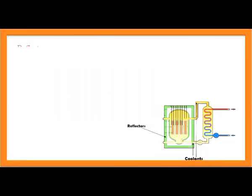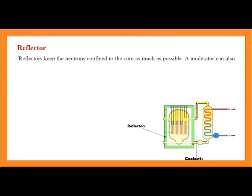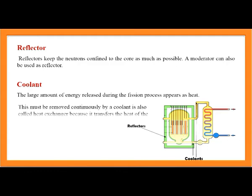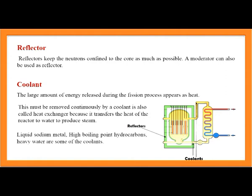Reflector: Reflectors keep neutrons confined to the core as much as possible. A moderator can also be used as a reflector. Coolant: The large amount of energy released during fission appears as heat. This must be continuously removed by a coolant, also called a heat exchanger, which transfers the reactor's heat to water to produce steam. Liquid sodium metal, high boiling point hydrocarbons, and heavy water are some coolants.